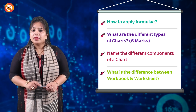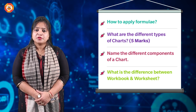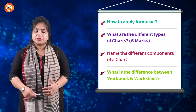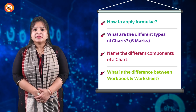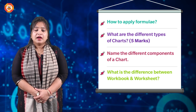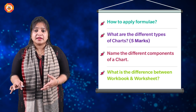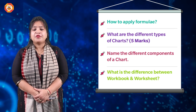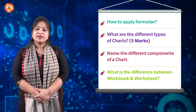The second important topic is charts — what are the different types of charts? This question came in the board exam last year too, and generally questions repeat. It carries a minimum of five marks. Next, what are the different components of a chart? You should know: gridlines, vertical axis, horizontal axis, legends. Learn at least five types of chart components thoroughly.